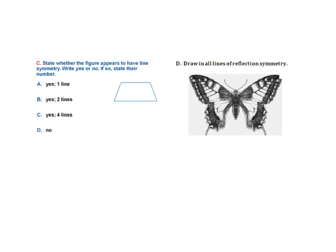So state whether, what kind of lines we got here? Well, I could draw a line here, but I think that's as far as I'm going to get. So that's going to be yes. Here, draw all reflections on the symmetry. I'm going to go one right there. That's all I got.